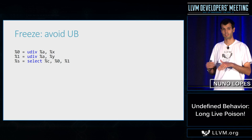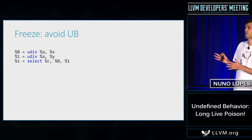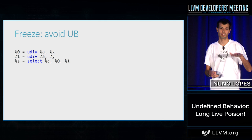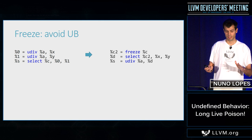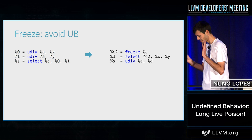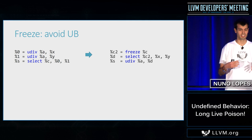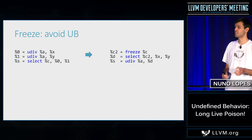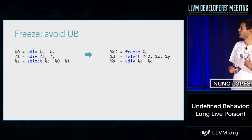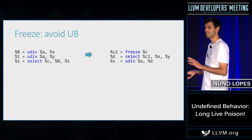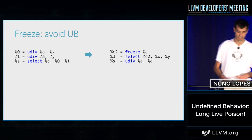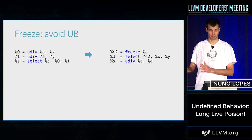In general, freeze is great to avoid any undefined behavior. Here I'll show a rewrite that InstCombine does today: it goes from a select of divisions to a division of select. We need to change this transformation to use freeze, because we are widening the select. Since select is poison if the condition is poison, we need to freeze the condition to make sure the value we are dividing by is not poison.